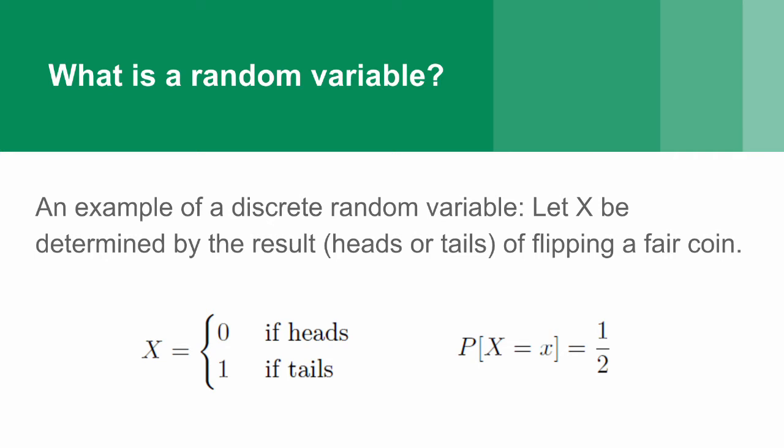The associated probabilities for each of the outcomes, in this case, is 1 half. If your coin was unfair, you could have different probabilities for your 0 and your 1 outcomes. You could have, for example, 3 quarters of the time the coin will land on heads, and 1 quarter of the time it will land on tails.